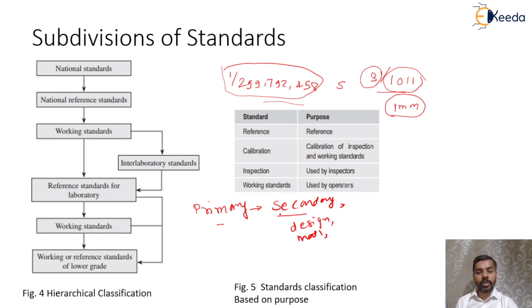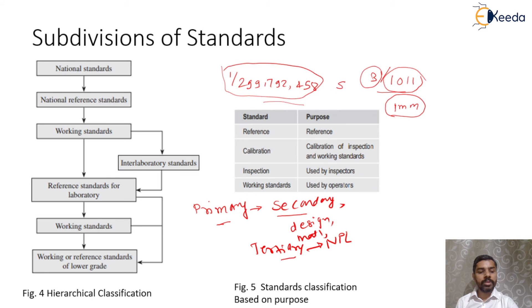Secondary standards are compared with primary standards only after a long period of time, so that there is no loss or destruction of the primary standard. The third type is tertiary standards. Primary and secondary standards are considered the ultimate control of standards and are used only for reference at very rare intervals. Tertiary standards are kept at different national physical laboratories and are used for comparison with secondary standards after a long period of time when calibration is necessary. Tertiary standards are used as a reference for working standards.